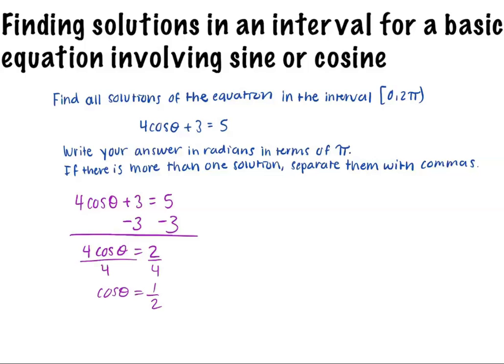Dividing both sides by 4, we write cosine of θ equals 2 over 4, which simplifies to cosine of θ equals 1 half.